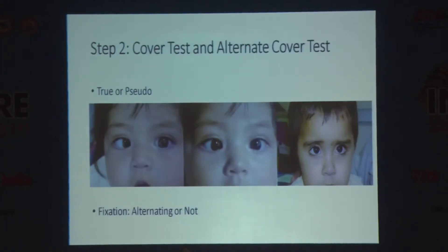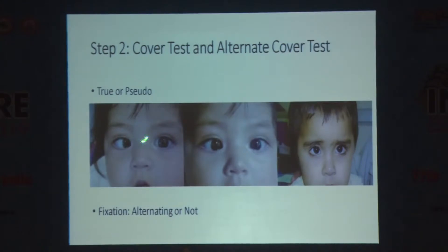The second step, after looking at head posture, is to do a cover test — to rule out pseudo versus true esotropia. If there's no movement on the cover test, these are pseudo esotropes because of the wide or telecanthic appearance of the tissues. You also need to see whether it's freely alternating, because a child who is not alternating likely has poor vision in one eye or amblyopia, and that may require treatment first.